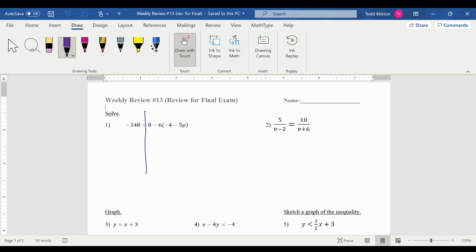So the first one is solving. Draw your line on your equal sign. Make sure you distribute first. So we have negative 148 equals 8 plus 24 plus 30p. Now right here we need to combine like terms before we move on.